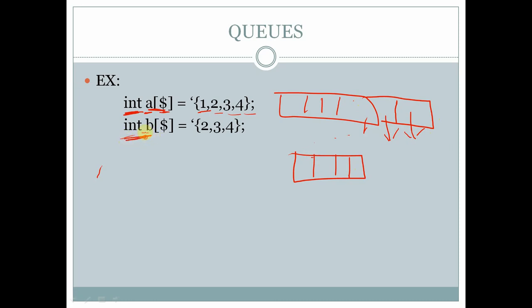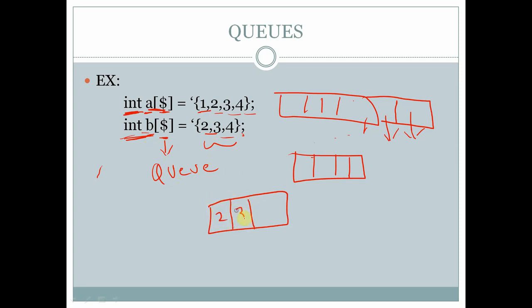In this example, int is the data type of the queue and b is the name of the queue, followed by a dollar symbol ($). Here we are inserting 2, 3, 4 — so three elements are there. A queue of three memory locations will be created and it will store the three elements 2, 3, 4. If we remove 4 from the queue, then the size of the queue will be automatically shrunk to 2.